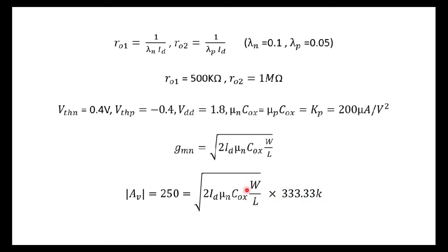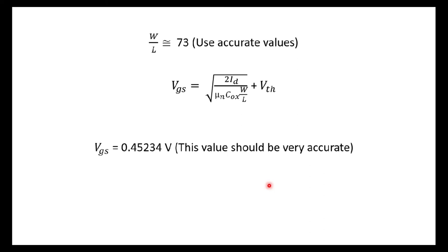The only unknown parameter here is W by L. We can calculate W by L using these parameters. So with that, the value of W by L becomes almost 73.